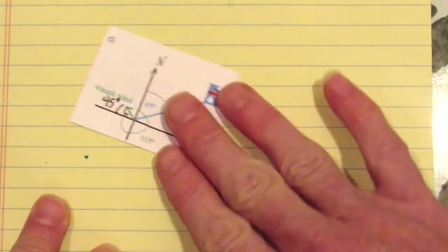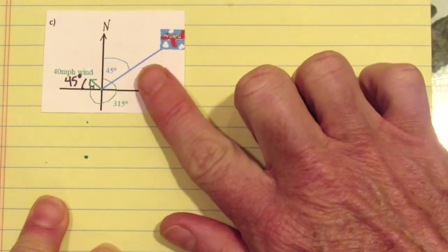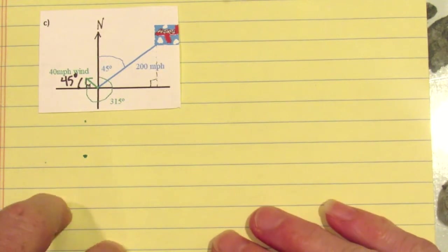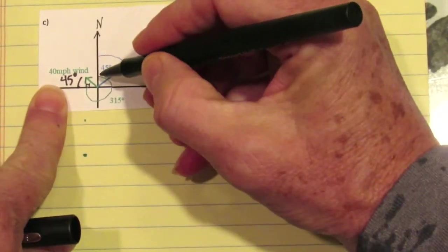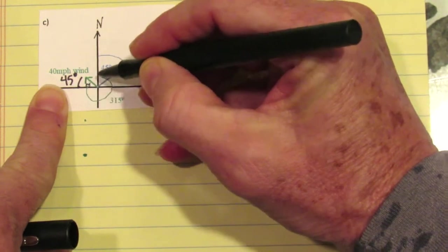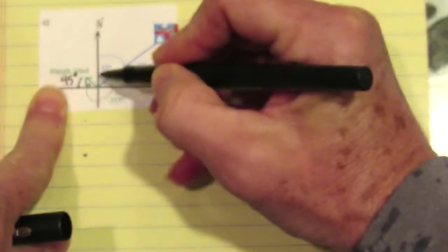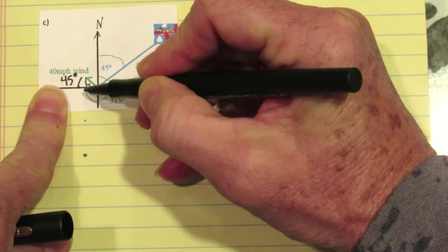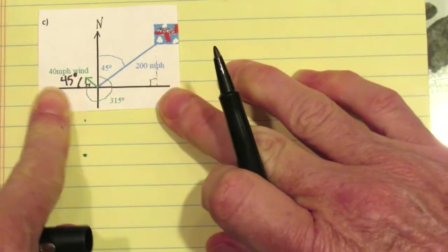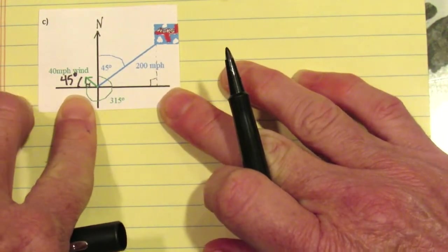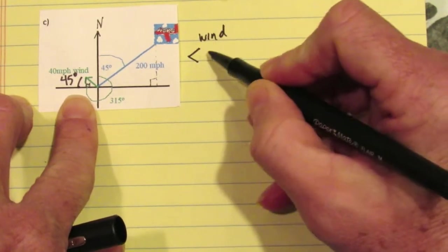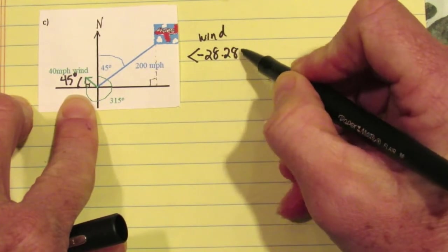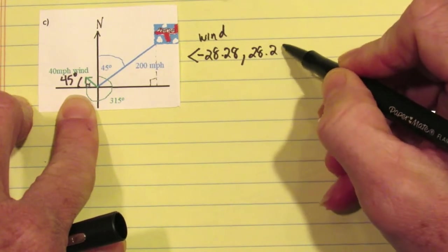You could also have the wind blowing in any direction. What if the wind is blowing northwest with a heading of 315 degrees? Headings are measured from north, so 315 degrees from north means I've measured three-quarters of a circle — 270 degrees — and then 45 degrees more. The terminal point of the wind still follows a 45-degree angle, so the components of the wind are negative 28.28 for x, and positive 28.28 for y.